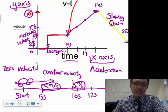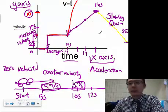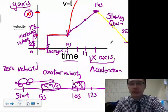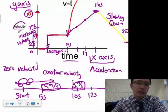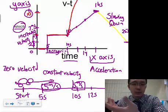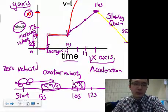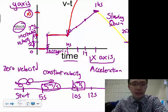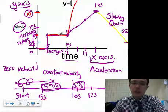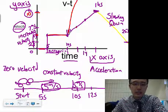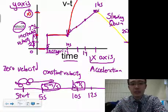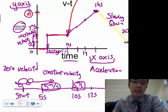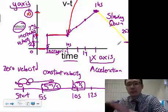It's easy to get VT graphs confused with DT graphs because they have similar patterns and slopes. Try to understand what you're graphing: in a VT graph you're looking at velocity — how quickly you're moving — per unit of time. At five seconds your velocity is five meters per second; at ten seconds still five — constant velocity. From ten to sixteen seconds velocity increases; from there it drops from ten to two meters per second — slowing down.